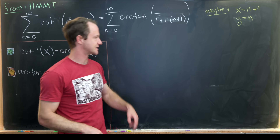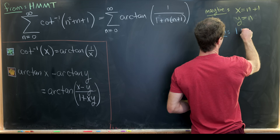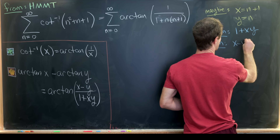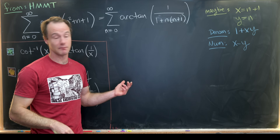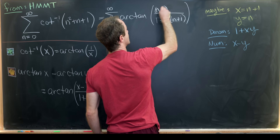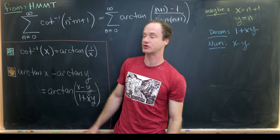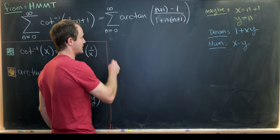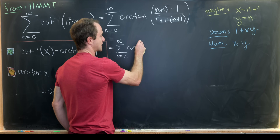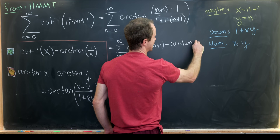With x equals n plus 1 and y equals n, the denominator is indeed 1 plus xy, and the numerator is x minus y, which is (n plus 1) minus n equals 1. So we can apply the difference formula in reverse, writing the sum as n goes from 0 to infinity of arctan(n plus 1) minus arctan(n).